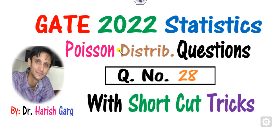Hello students, welcome to the next lecture on GATE 2022 statistics. Today we will discuss question number 28 related to the Poisson distribution with the help of shortcut tools.